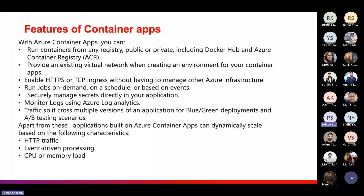Container Apps supports blue-green deployments — if we do not want to expose 100% traffic, we can provision two instances where 80% of traffic goes to the first container and 20% to the second. Container Apps also dynamically scales based on: HTTP traffic — the number of requests coming to the application, event-driven processing, and CPU and memory load.